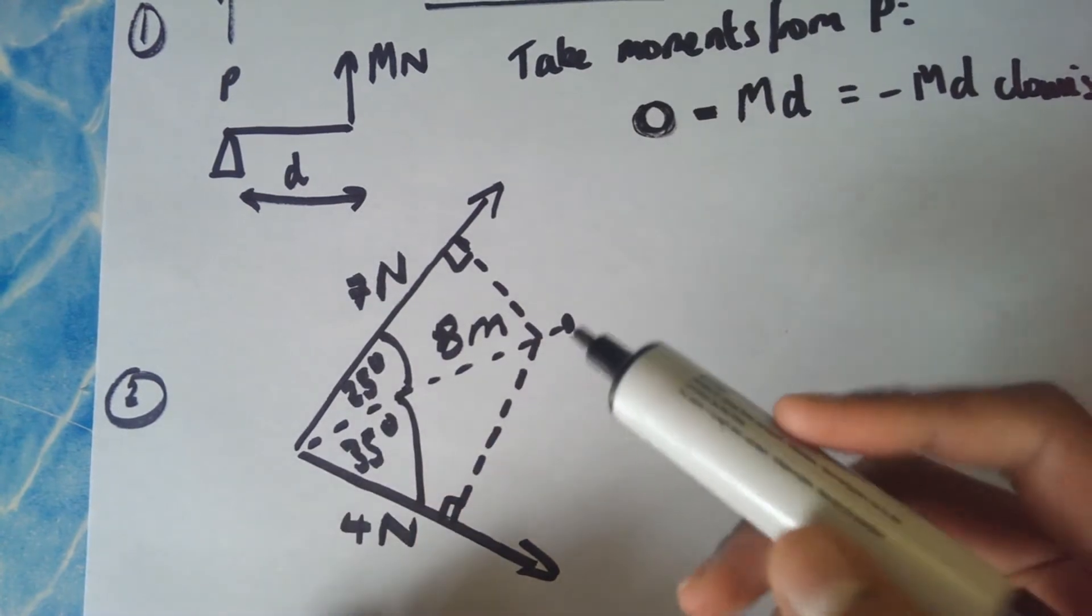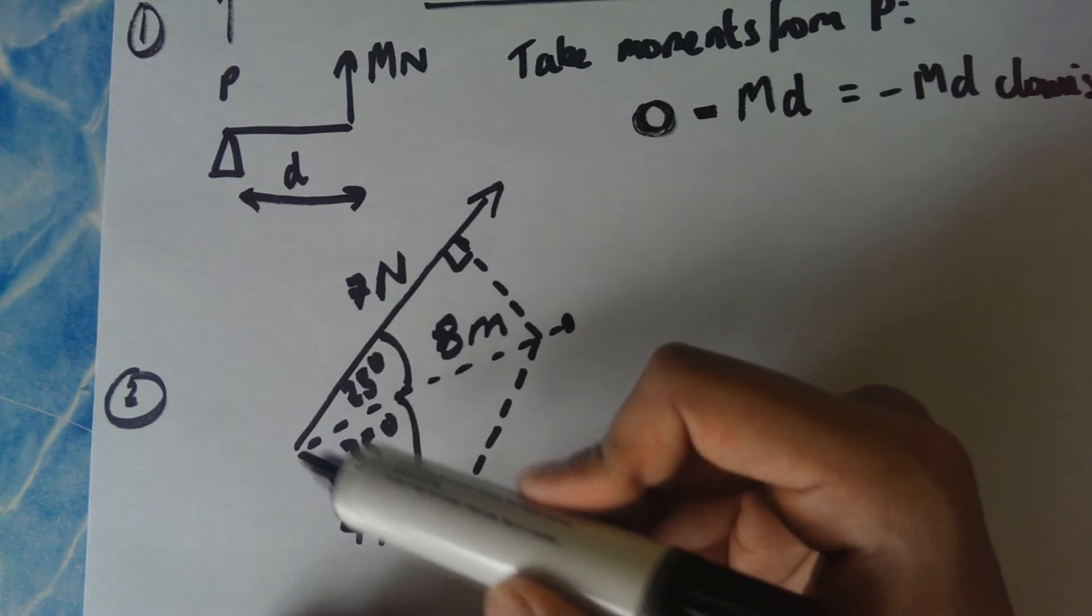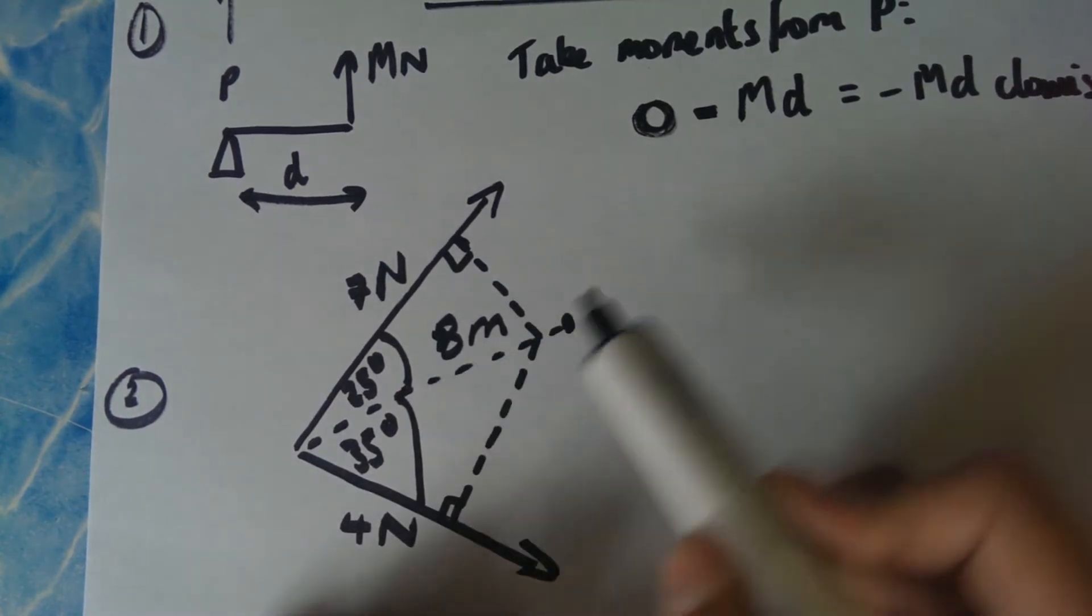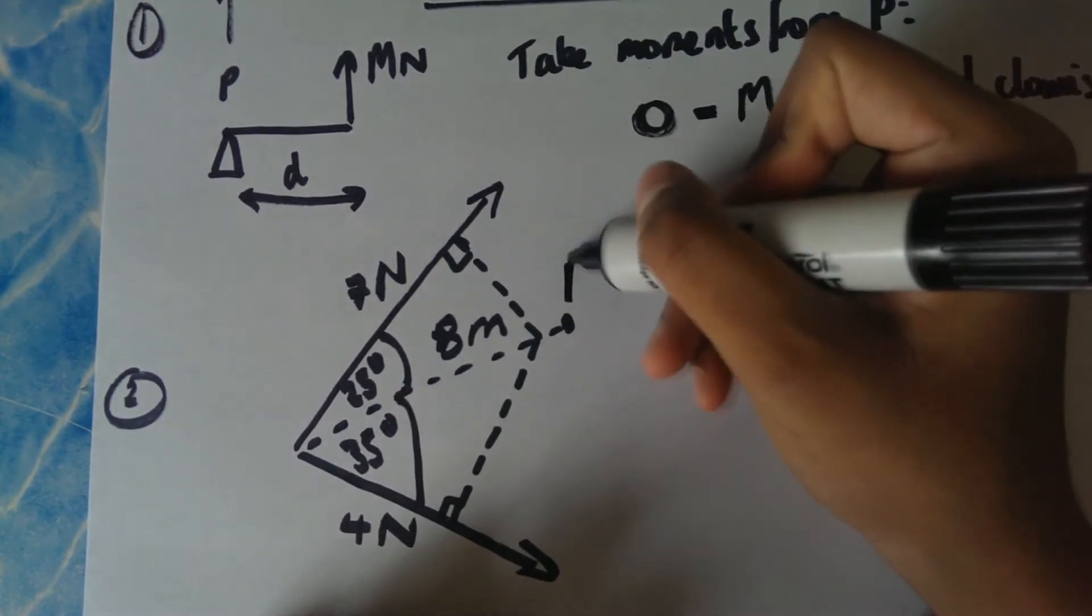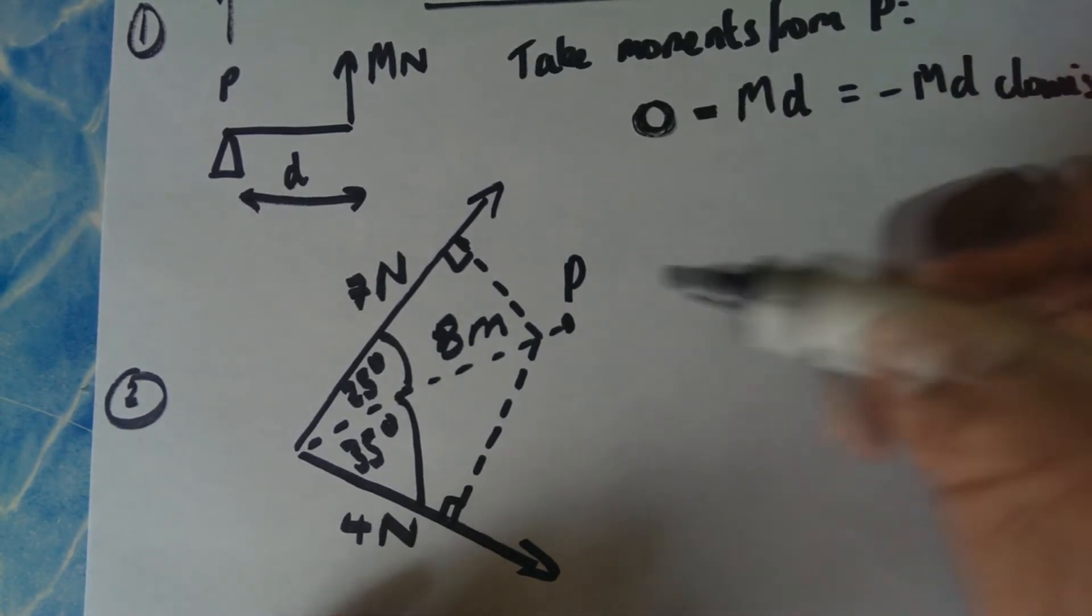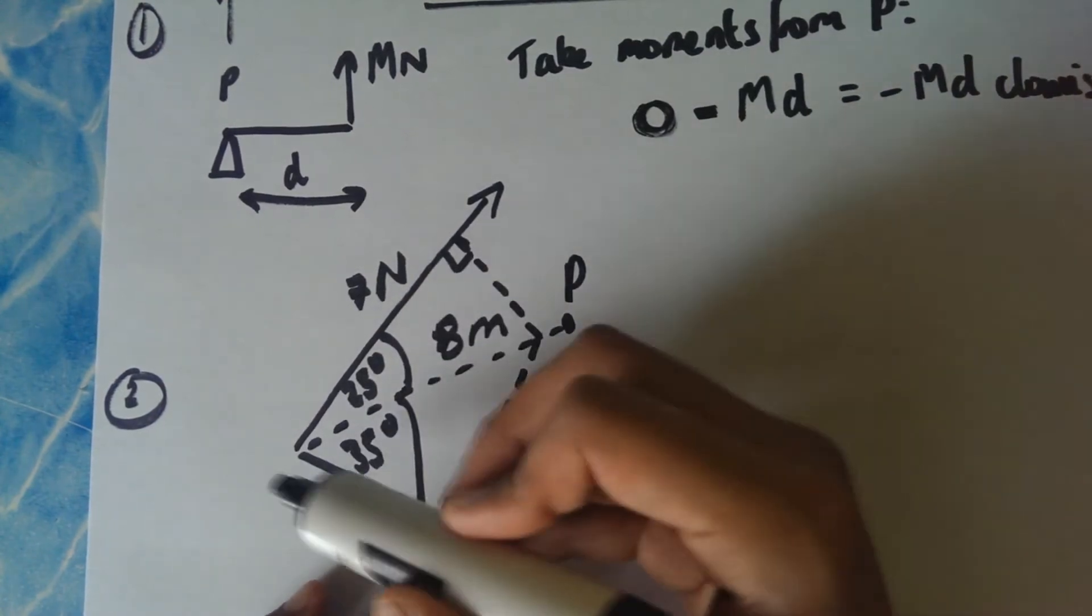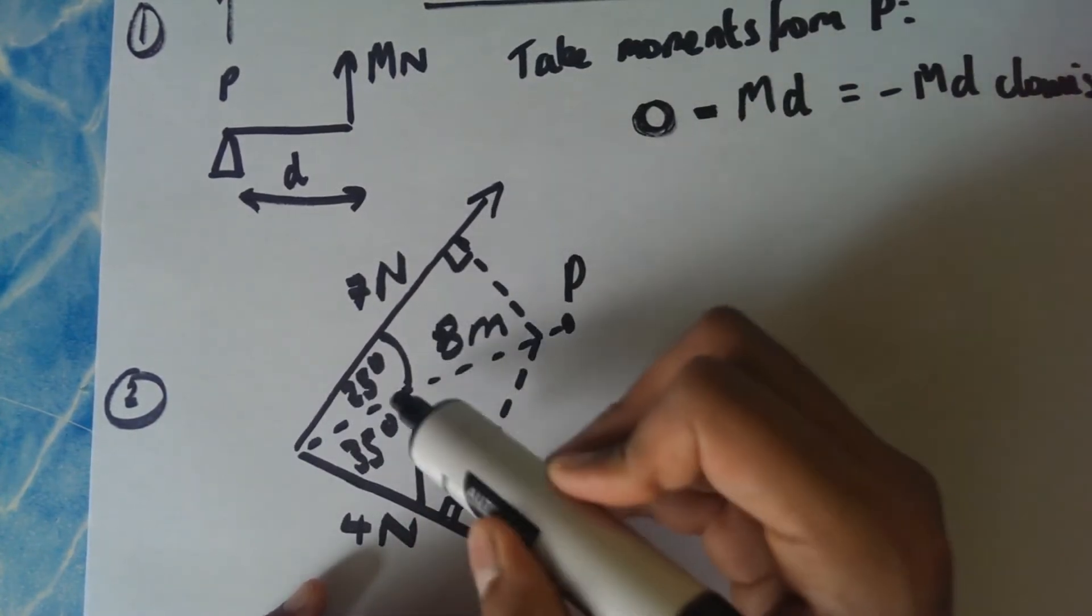And so this is a good example. There are two forces, one seven newtons and one's four newtons. They are eight meters away from pivot, which we'll call P, acting on a lamina. Sorry, I don't call it pivot. I'll call it point P. And they're both eight meters away. One's acting at 25 degrees and one's acting at 35 degrees acting this way.